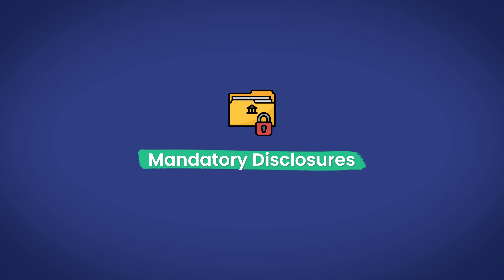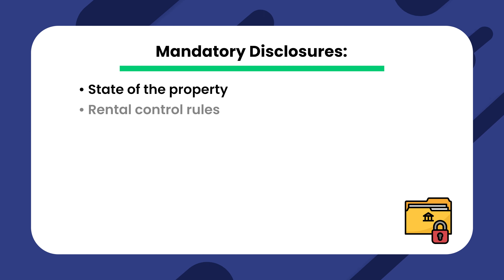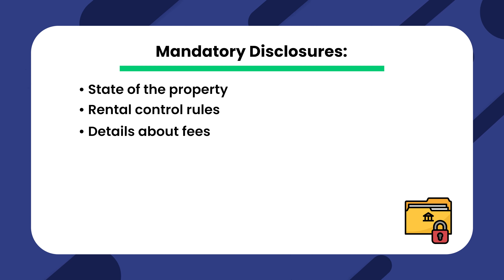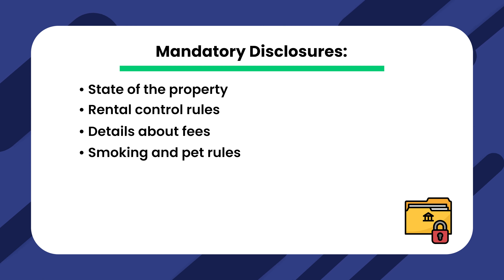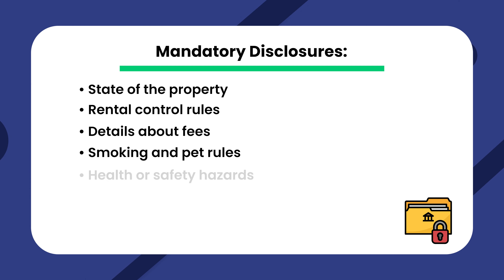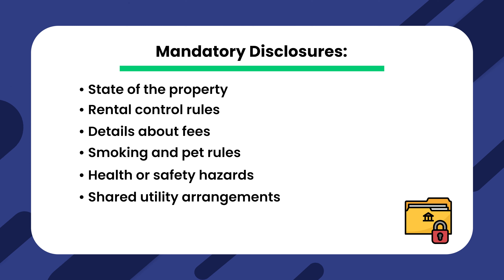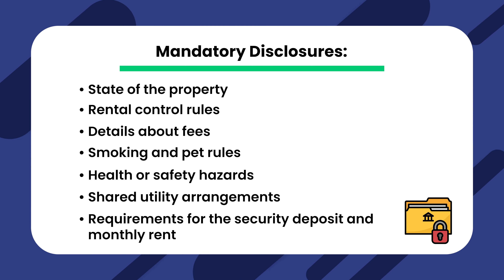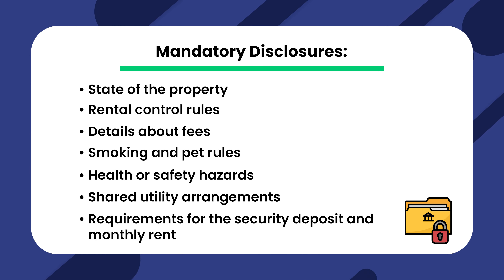There are also mandatory disclosures. These could be about the state of the property, rental control rules, details about fees, smoking and pet rules, any health or safety hazards, shared utility arrangements, and requirements for the security deposit and monthly rent.